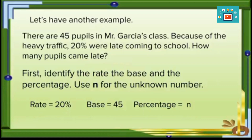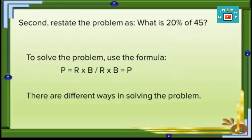Now let us have another example. There are 45 pupils in Mr. Garcia's class. Because of heavy traffic, 20% were late to school. How many pupils came late? First, identify the rate, the base, and the percentage — use n for the unknown. The rate is 20%, the base is 45, and the missing term is the percentage. Restate the problem as: what is 20% of 45?